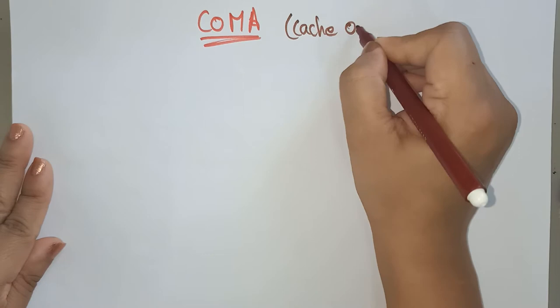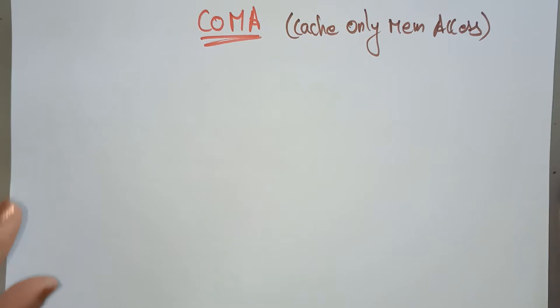Hi students, welcome back. Let's continue with the multiprocessor architecture models. In the previous videos, I explained about the UMA model and NUMA model. Coming to another type of multiprocessor architecture is COMA — Cache Only Memory Access. UMA is Uniform Memory Access, NUMA is Non-Uniform Memory Access, and COMA is Cache Only Memory Access.